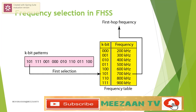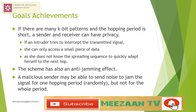This figure shows the frequency selection process for FHSS. Suppose we have decided to have eight hopping frequencies — remember that this is extremely low for real applications and is just for illustration. In this case, M is 8 and K is 3. The pseudorandom code generator will create eight different three-bit patterns, mapped to eight different frequencies in the frequency table. If there are many k-bit patterns and the hopping period is short, a sender and receiver can have privacy. If an intruder tries to intercept the transmitted signal, she can only access a small piece of data because she does not know the spreading sequence to quickly adapt herself to the next hop.